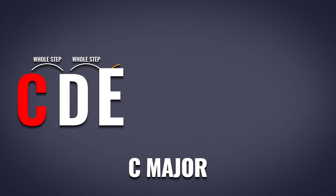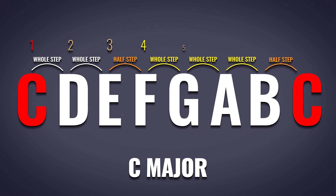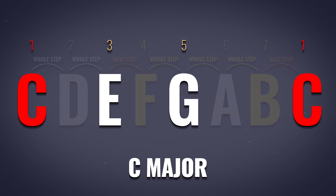And this goes a long way in explaining the tension resolution of the tritone, because the fourth and the seventh major scale degrees are where we find the half steps away from the chord tones of the one chord. The F and the B are a half step from the E — the third — and the C, the root of the tonic chord, the C major triad.